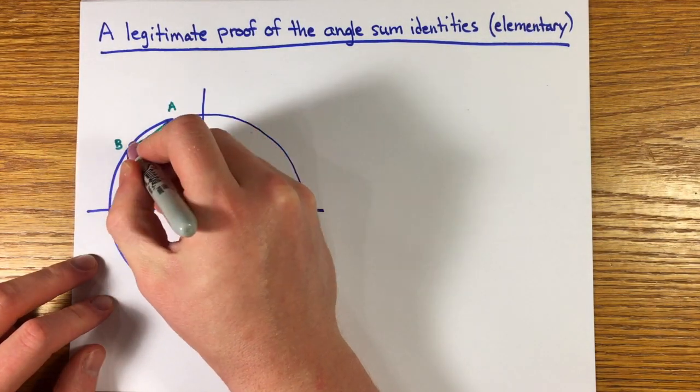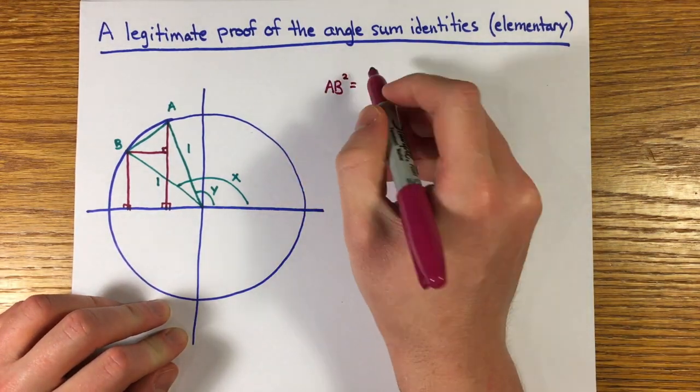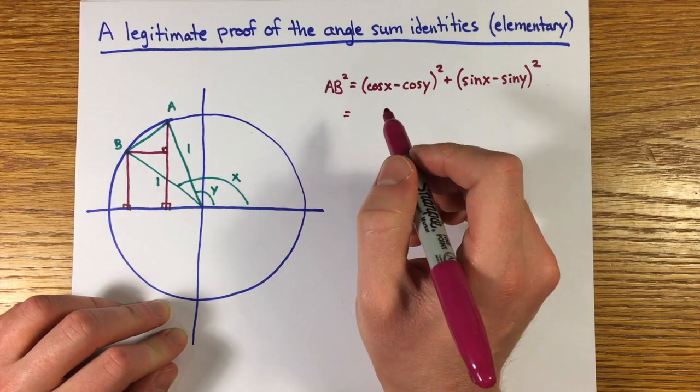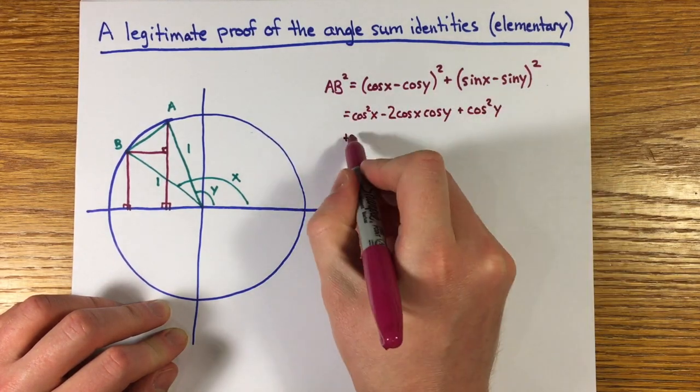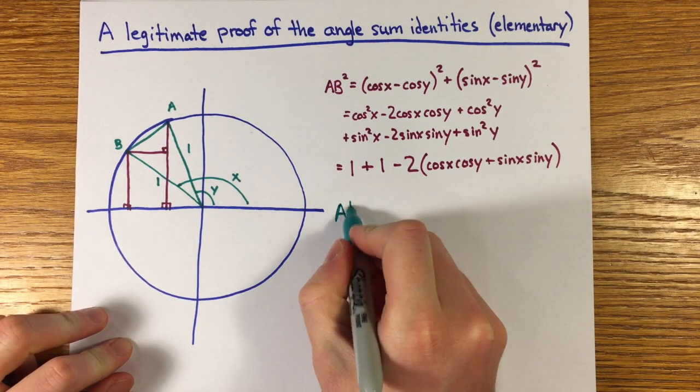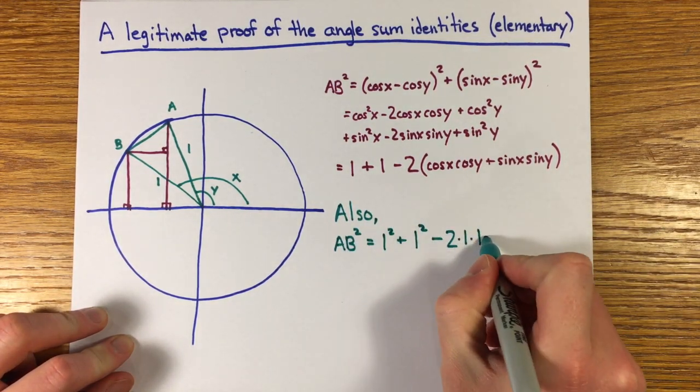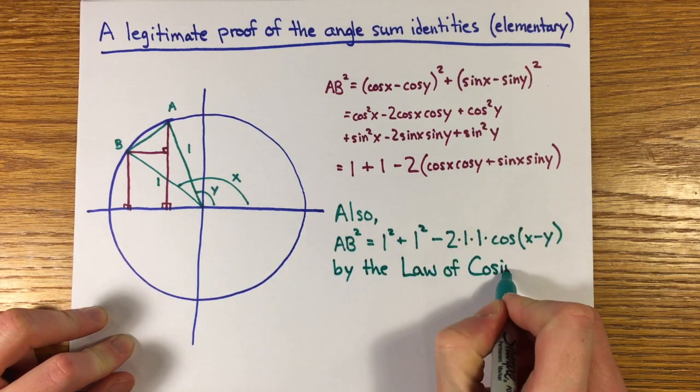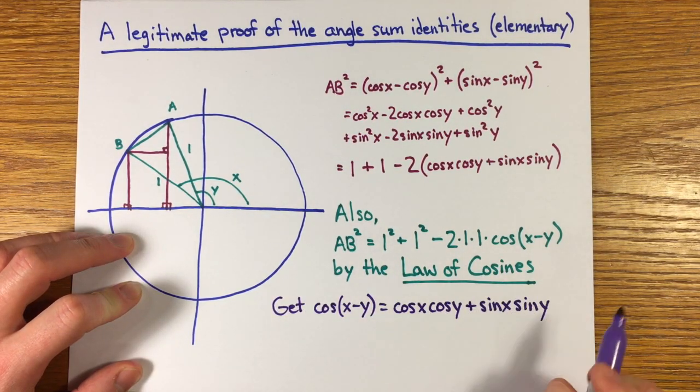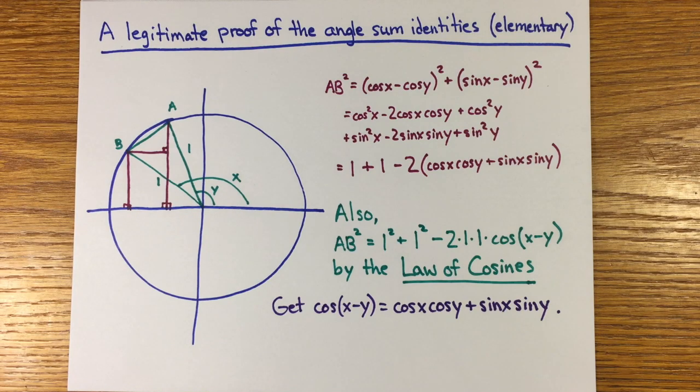You just compute the length of the chord AB in two ways. First is the hypotenuse of the magenta triangle, which gives an expression in terms of the sines and cosines of x and y. And it has another expression as the base of the isosceles turquoise triangle in terms of cosine of x minus y by a theorem called the law of cosines. Equating the two expressions gives the cosine angle difference identity.